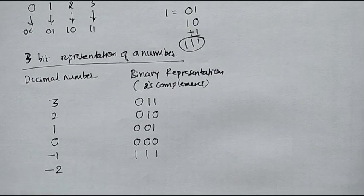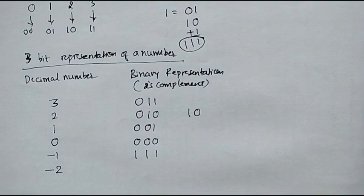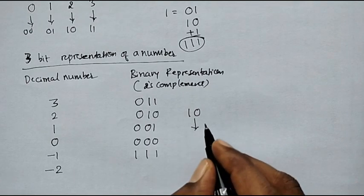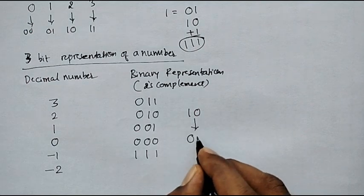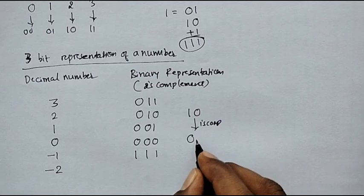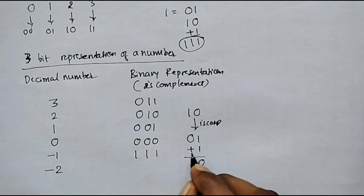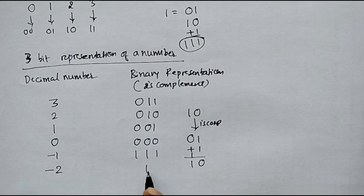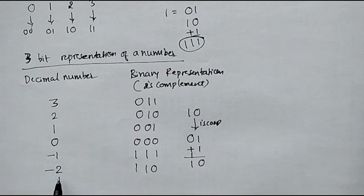Similarly, minus 2: we know 2 can be represented as 10. Taking the two's complement, first take the one's complement, which gives 01. Adding 1 gives 10. Since the number is negative, we append a 1 prefix, so minus 2 is represented as 110.